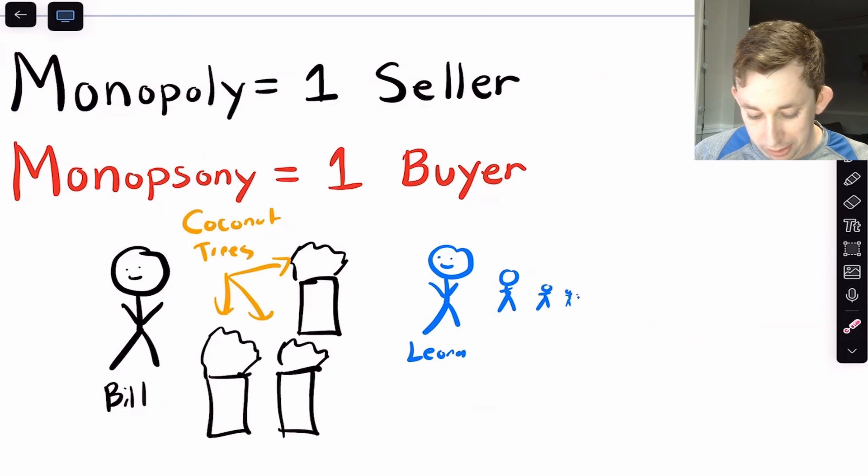their only choice is to go work for Bill. And if their only choice is to work for Bill, then Bill is going to have power in setting wages. He could probably pay them a lower wage than if there were other firms in this town. So how does this manifest itself? Well, it's going to be on a graph.